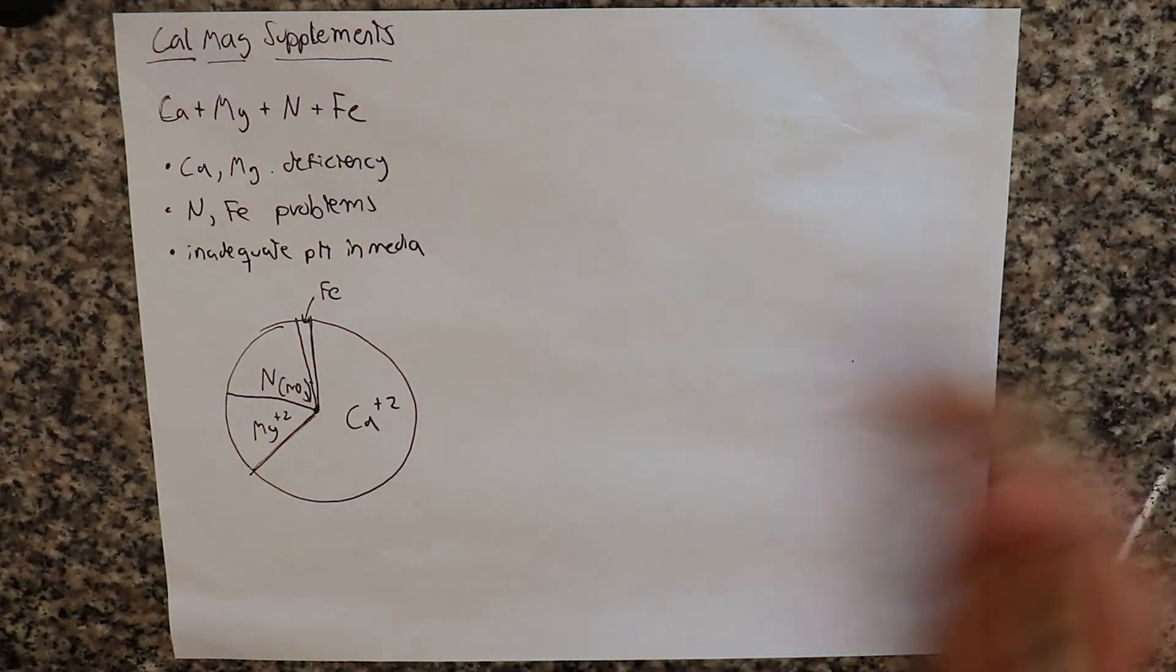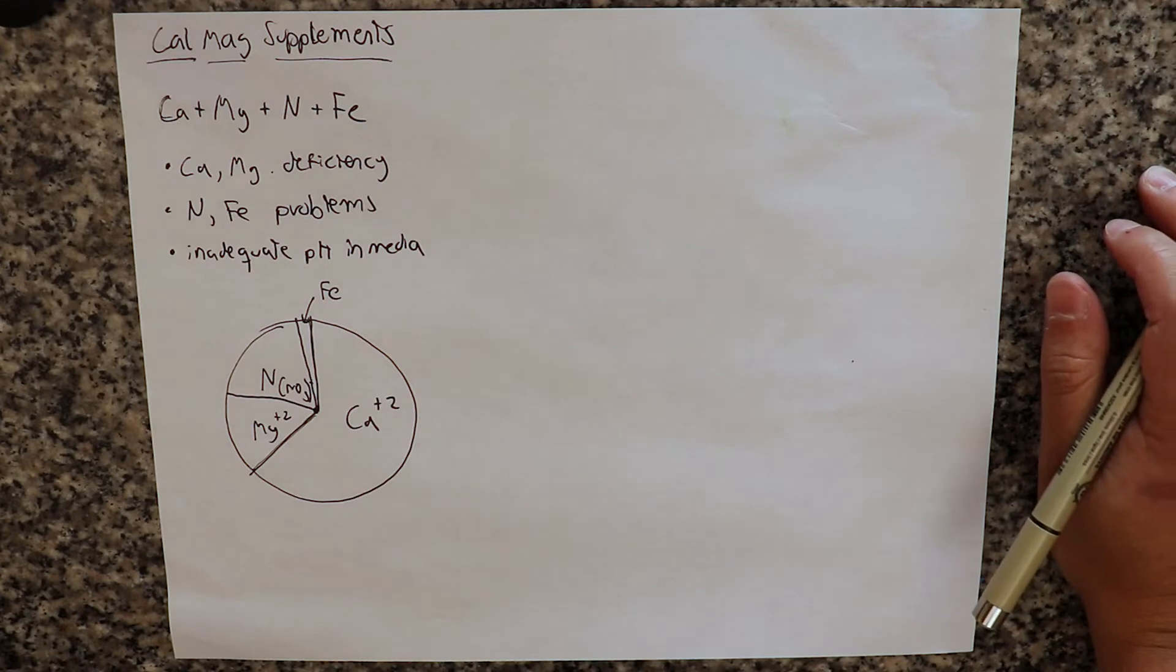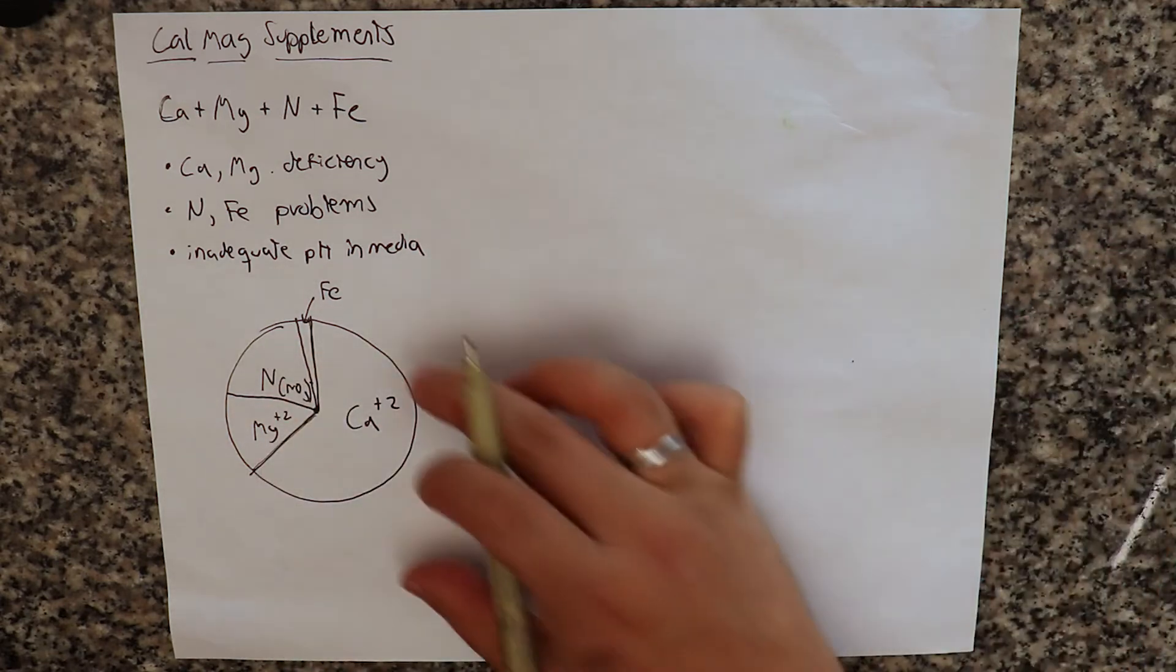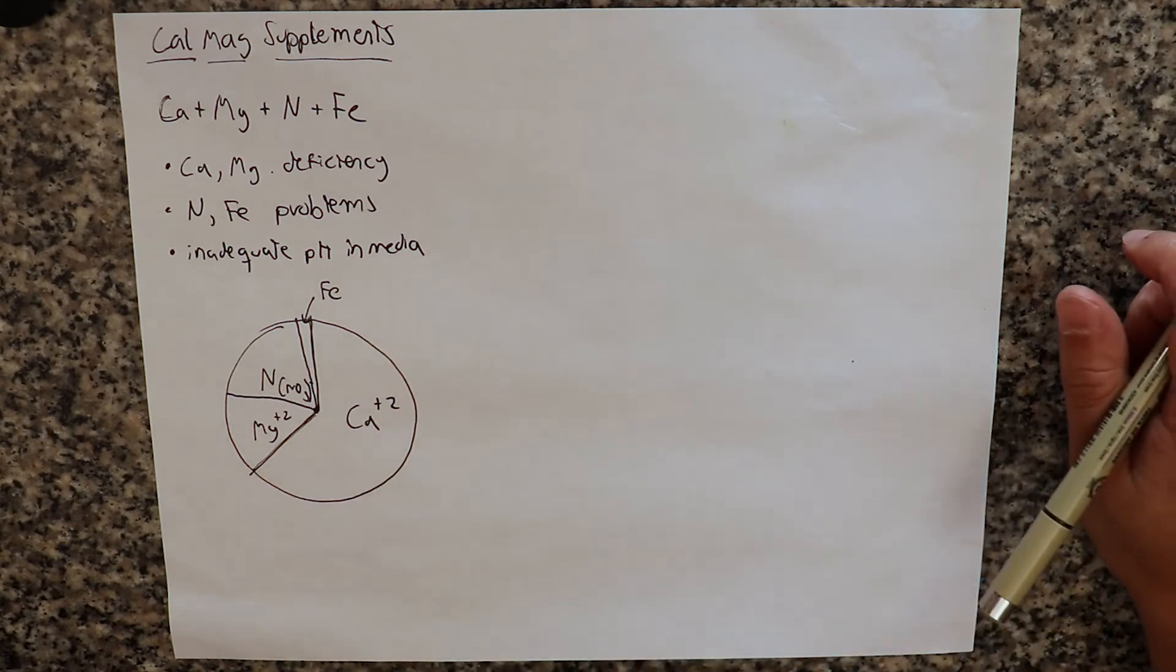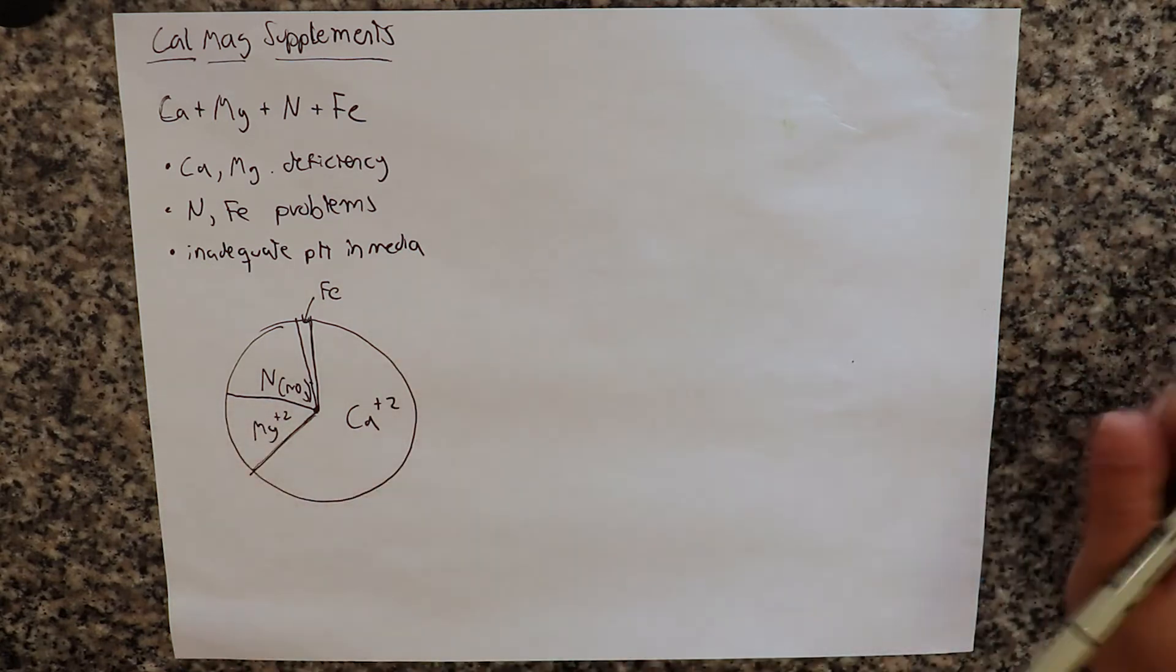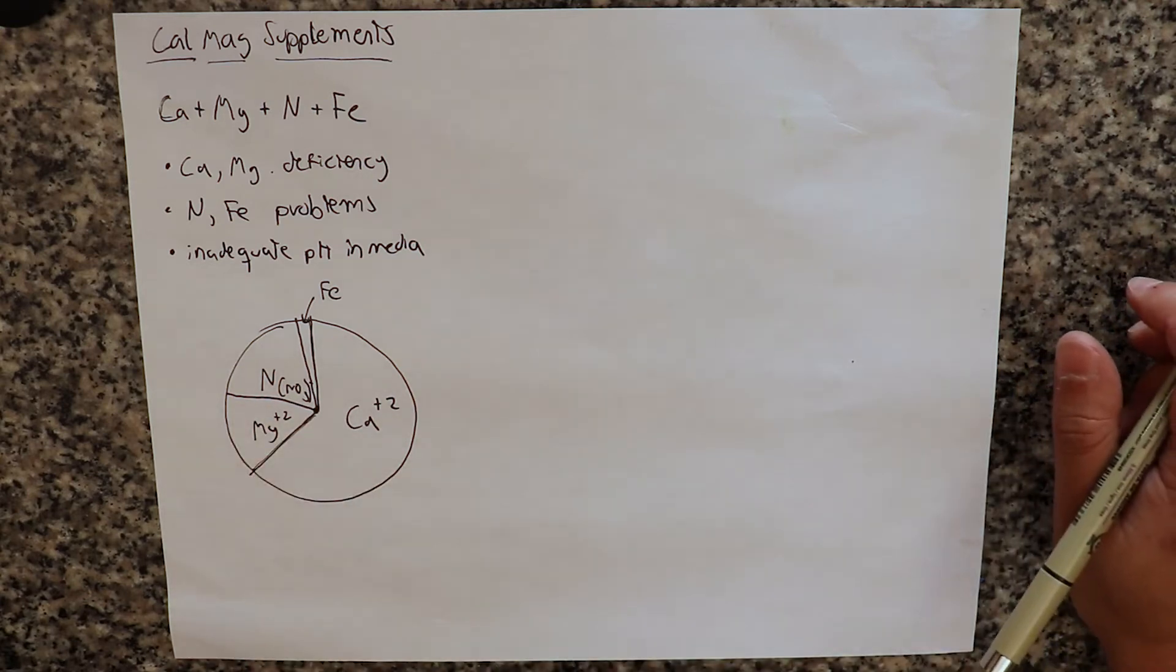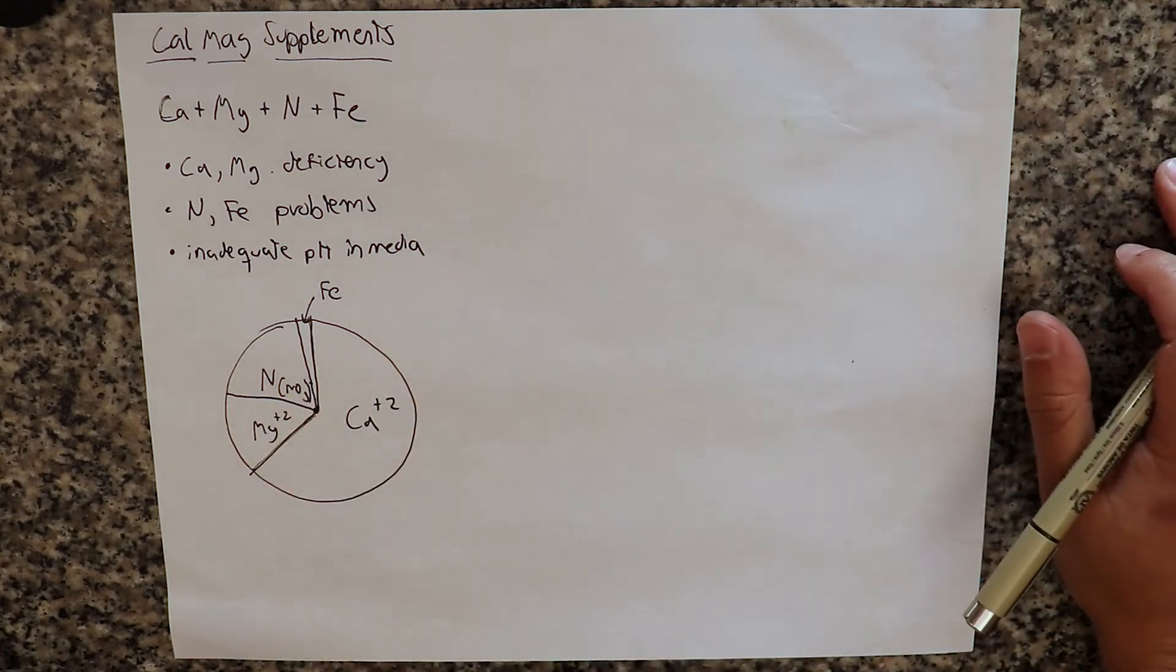which is usually about 10 times less than the nitrogen or the magnesium. So you have a small amount of iron because it's a micronutrient, a lot of calcium, around one-fifth to one-fourth of the amount of magnesium. And then nitrogen is usually fairly equal to the magnesium, sometimes two-thirds of the magnesium.